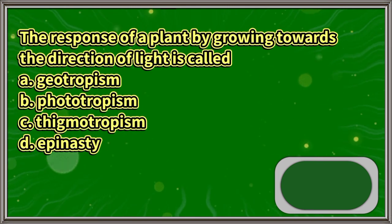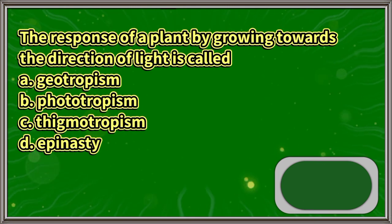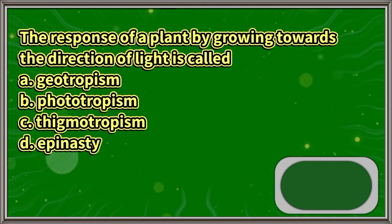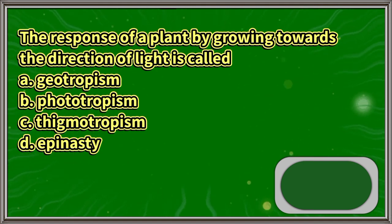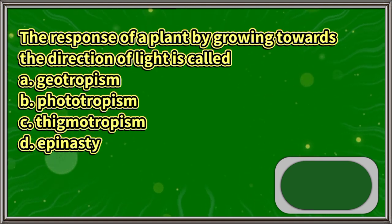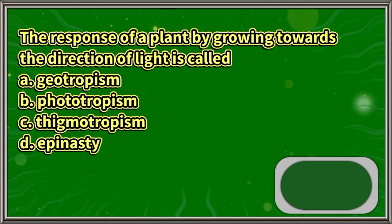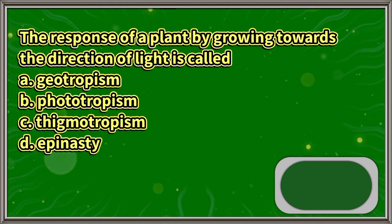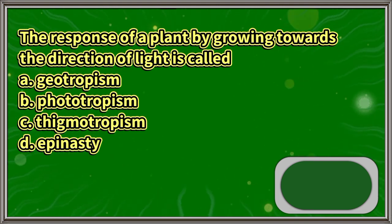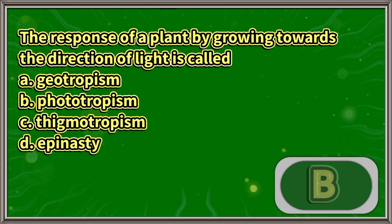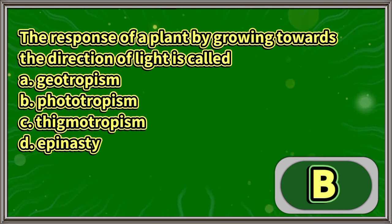The response of a plant by growing towards the direction of light is called: A. Geotropism. B. Phototropism. C. Thigmotropism. D. Epinastie. The answer is letter B.